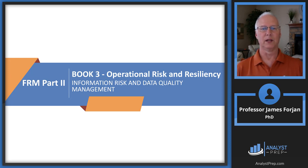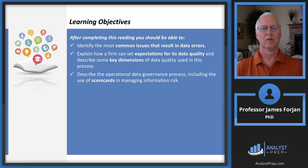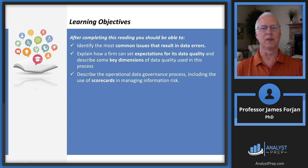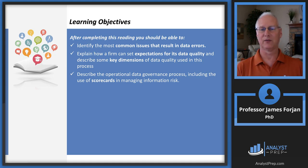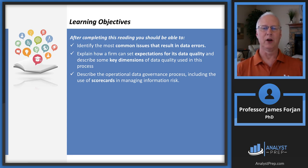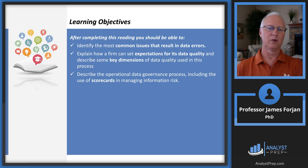Those of you who looked at the chapter will note that it is relatively short, and so this might be the shortest recorded video I make in Part 1 or Part 2. You could have guessed that if you looked at the learning objectives — only three. I'm not going to pick among these as to which ones are more important; let's assume equal importance. We're going to identify common issues, explain how a firm can set expectations for data quality, and then talk about operational data governance. We've talked about corporate governance and risk governance, so it makes perfect sense to extend that to data governance as well.